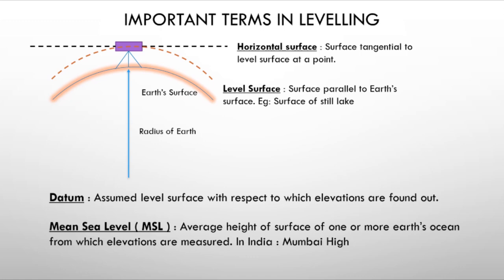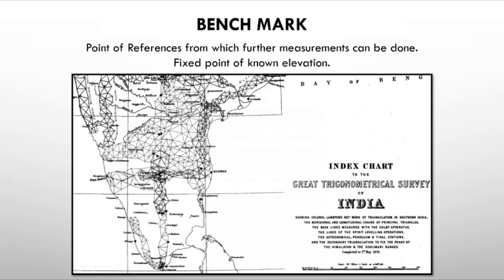In India, Mumbai High is fixed as the mean sea level reference. Important terms include benchmark and datum. The Great Trigonometric Survey of India was a project in British India — the first survey — covering a North-South corridor and East-West corridor with fixed-mark stations 100 km apart.